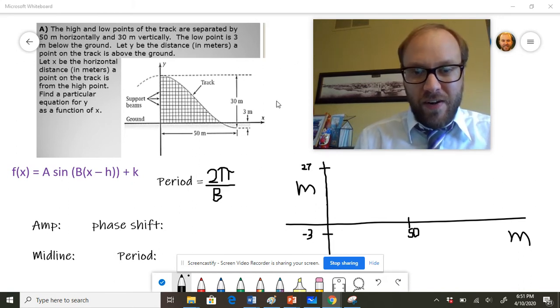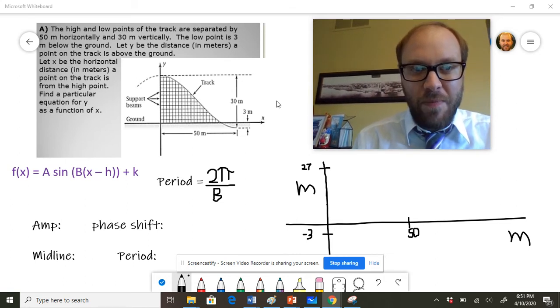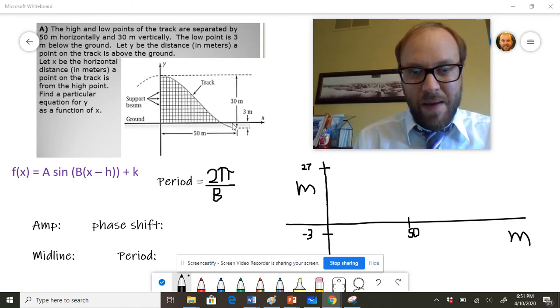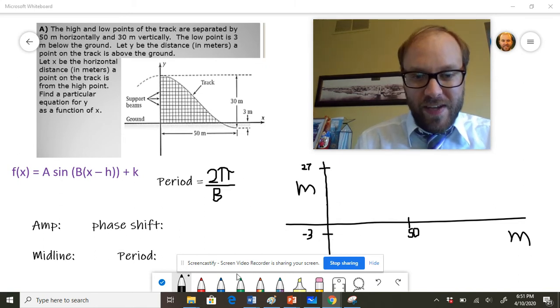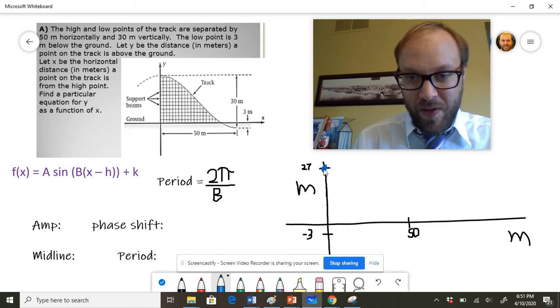I'm going to start out here. It says that we have a high point - let's see, there's a 30-meter distance between the top and the bottom. Notice this thing goes 3 feet below the ground, so it's actually starting out at a high point. If it's going to go 3 feet below the ground, its high point is actually going to be at 27. So I'm going to put a point right there to kind of start this thing out.